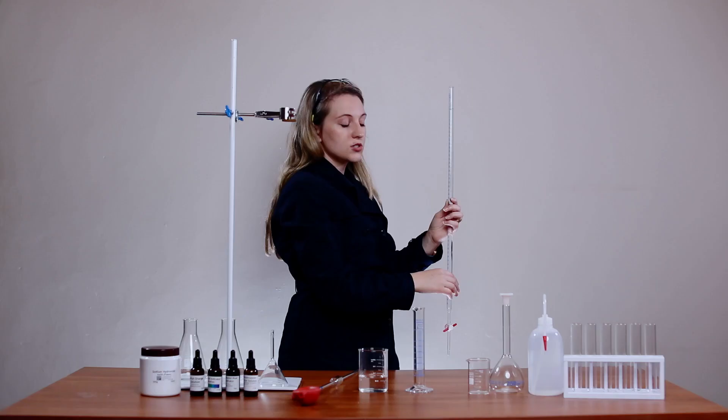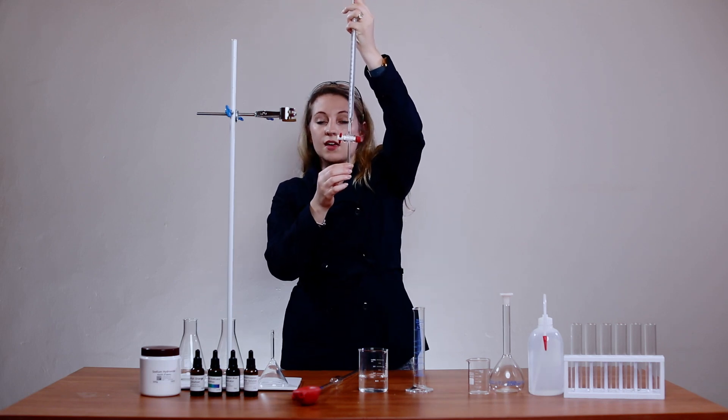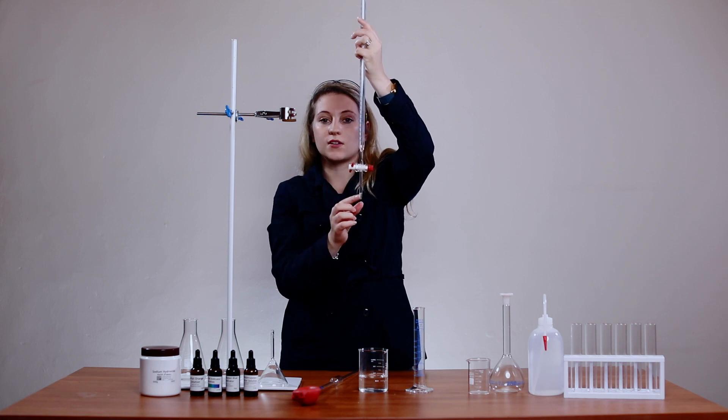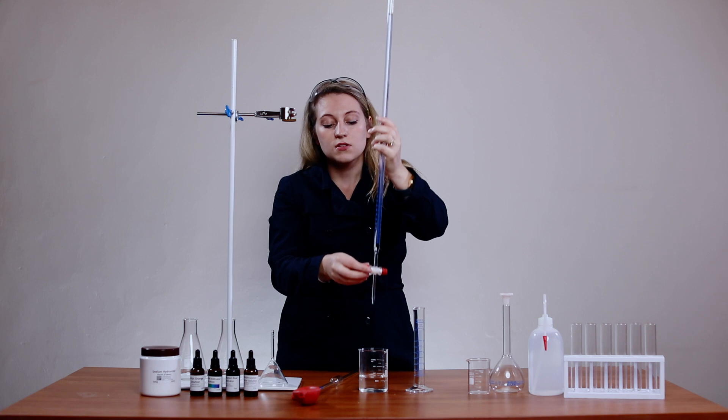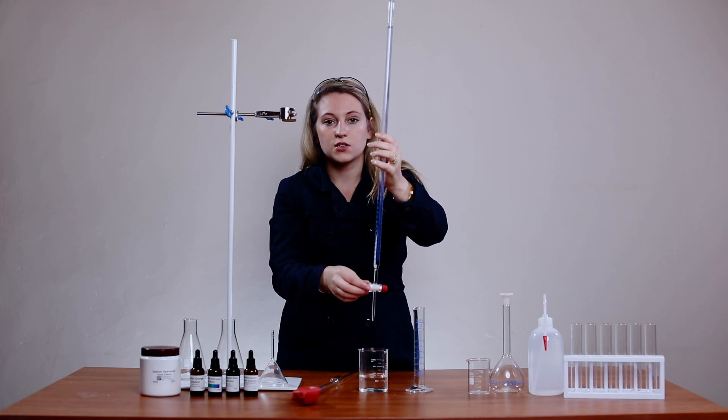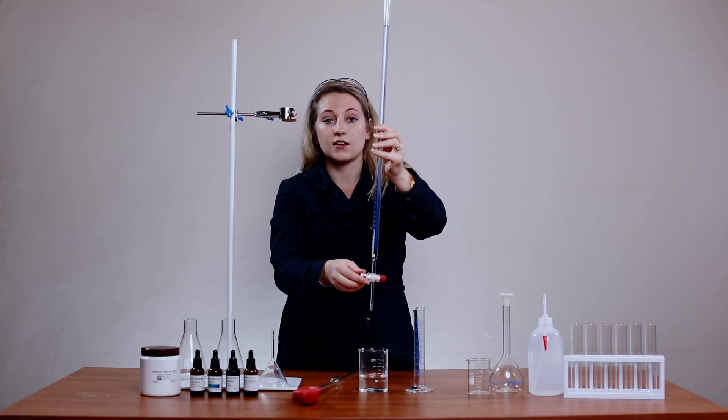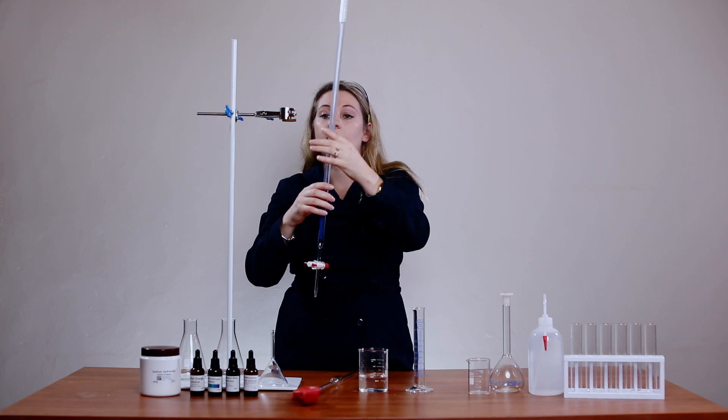Another thing that you should look out for when performing a titration is air bubbles. You need to ensure that there's no air bubbles in this area below. If there is an air bubble you need to open your tap, shake your liquid and close it again to ensure that you've got no air bubbles because that might influence your accuracy.